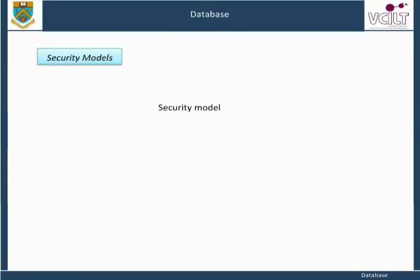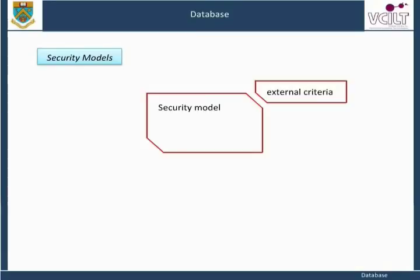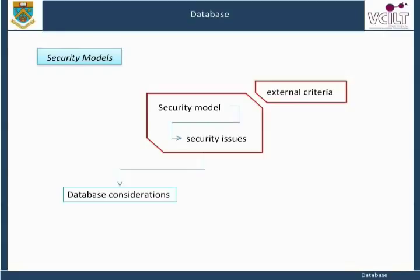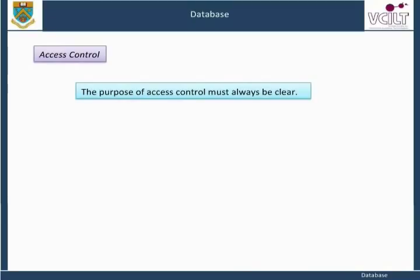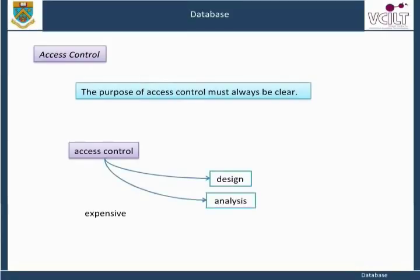A security model establishes the external criteria for the examination of security issues in general and provides the context for database considerations, including implementation and operation. Specific DBMS have their own security models, which are highly important in systems design and operation. The purpose of access control must always be clear. Access control is expensive in terms of analysis, design, and operational costs. It is applied to known situations, to known standards, to achieve known purposes. Do not apply controls without all the above knowledge. Control always has to be appropriate to the situation.